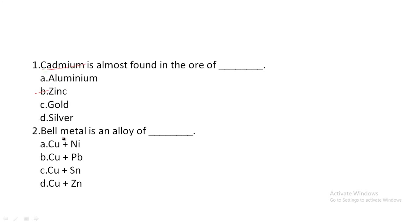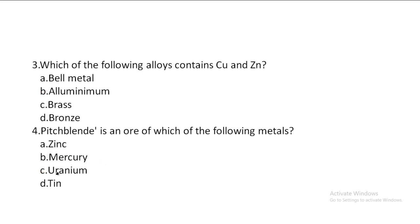Next one: Bell metal is an alloy of — Option A: Copper plus Nickel, Option B: Copper plus Lead, Option C: Copper plus Tin, Option D: Copper plus Zinc. So, Bell metal is an alloy of Copper plus Tin — Option C is the correct answer. In this alloy, copper is 80% and tin is 20%.